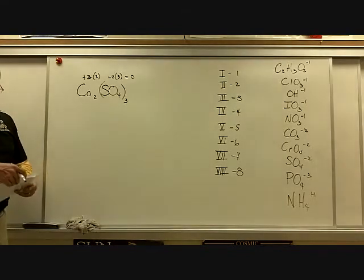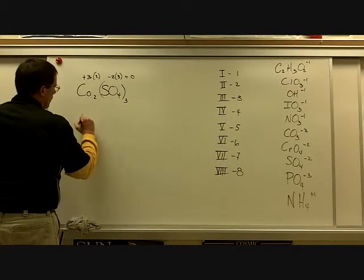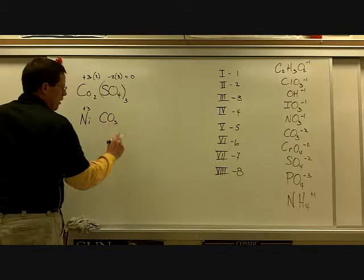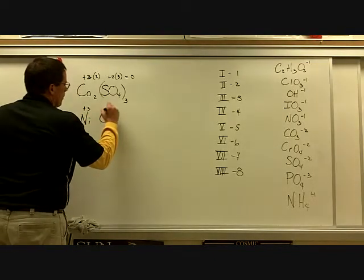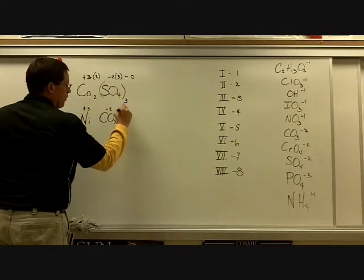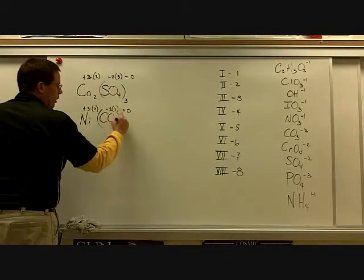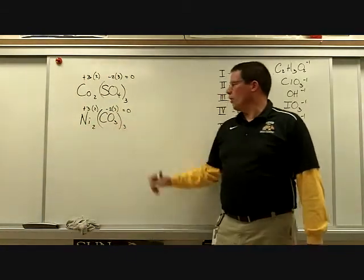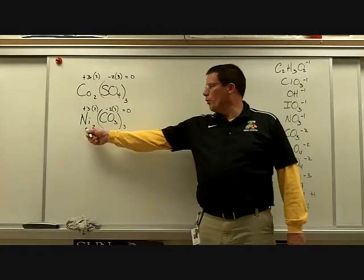Flip to page 10. Example 8 says: nickel(III) carbonate. Nickel is Ni with a plus-3 charge. Carbonate is CO₃ with a negative-2 charge. Since 3 and 2 don't balance directly, we need two nickels and three carbonates. Parenthesize the carbonate: Ni₂(CO₃)₃. So that's nickel(III) carbonate.